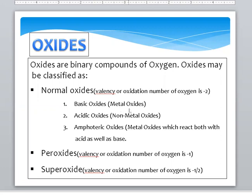Normal Oxides can be categorized as Basic Oxide, which is formed from a metal; Acidic Oxide, which are the non-metal oxides; and Amphoteric Oxides, which are metal oxides that react both with acid as well as with base.